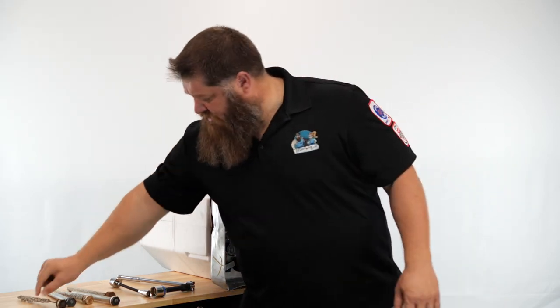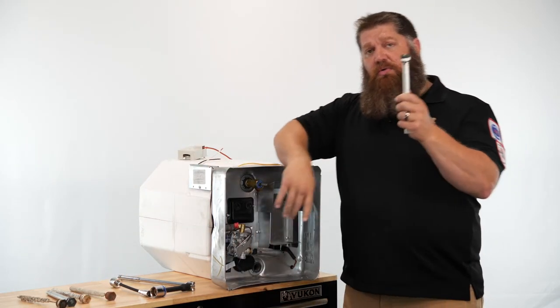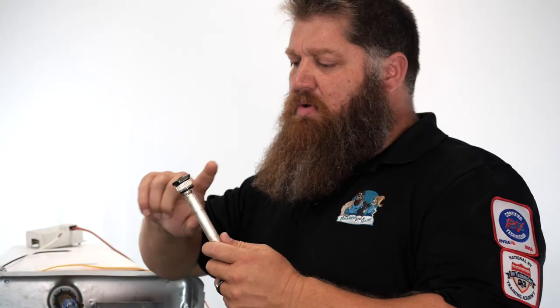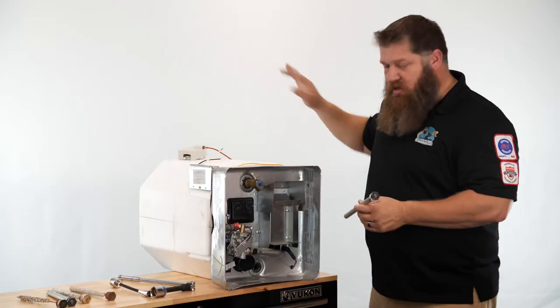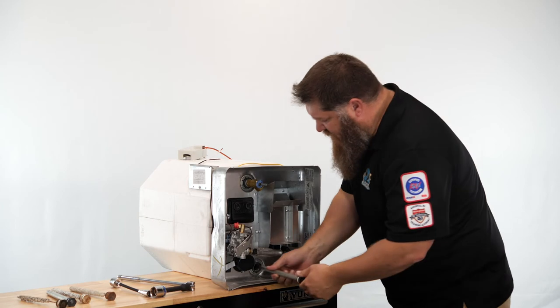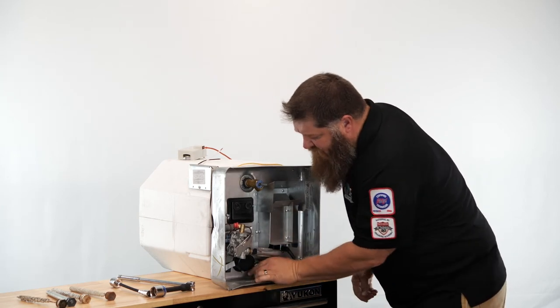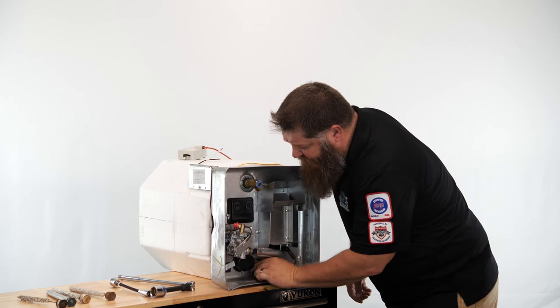Next, we'll take our new anode rod, our replacement anode rod, and we'll actually put Teflon tape. We'll cut off the water and, of course, we'll begin to install it.